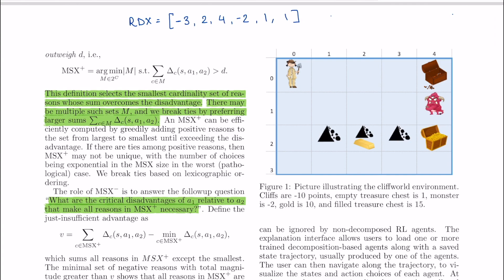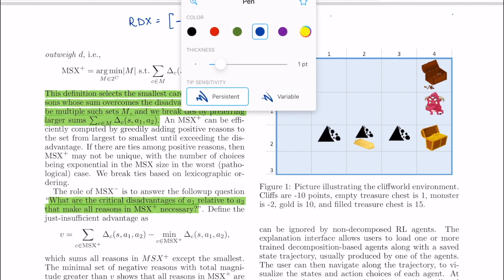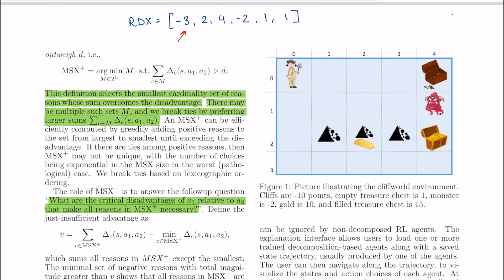MSX has two parts: MSX plus consists of a subset of components that prefers action A over B and similarly MSX minus prefers B over A. Now we'll talk about how do we get MSX plus and minus. For MSX plus it's pretty simple: in the vector of RDX we can see that there are both kinds of values, positive as well as negative values.